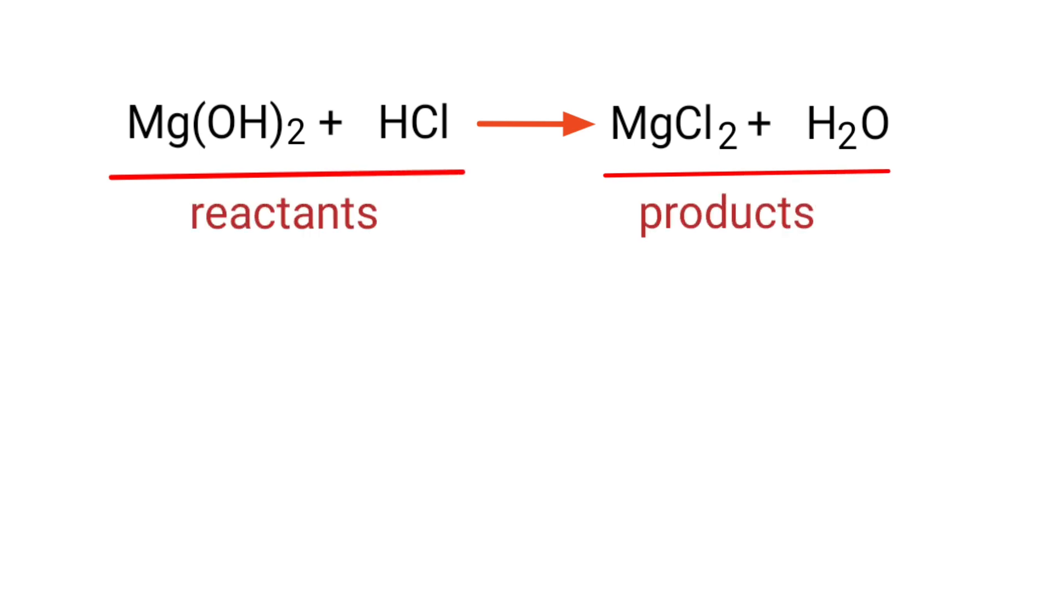In this equation, the reactants are Magnesium Hydroxide and Hydrogen Chloride, and the products are Magnesium Chloride and Water.